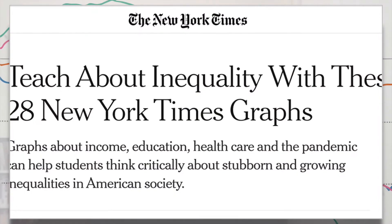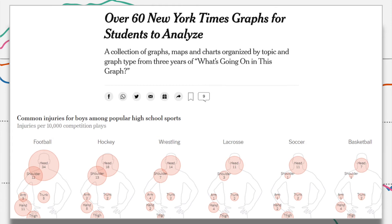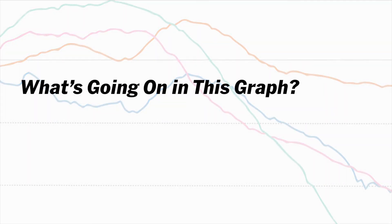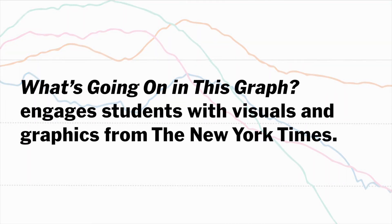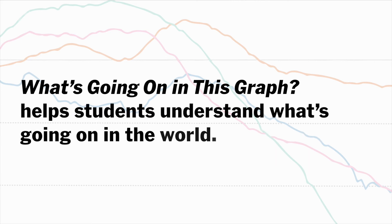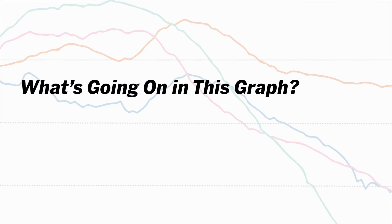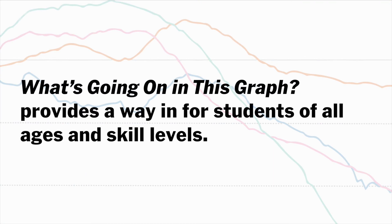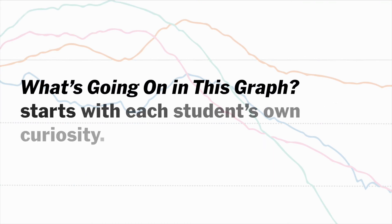In addition to these weekly graphs, we also have roundups like '28 Graphs on Inequality' and '60 of Our Favorite Graphs.' 'What's Going On in This Graph' aims to engage students with the visual and graphic representations that the Times creates to help readers better understand what's going on in the world. Through open-ended prompts and a live chat with expert educators, this feature provides a way in for students of different ages and skill levels and starts with each student's own curiosity. Visit the 'What's Going On in This Graph' page on The Learning Network to start using this activity with your students.